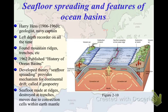He found mountain ridges. He found trenches. He put all of this together and published it as 'The History of Ocean Basins,' which provided a mechanism for continental drift. Today we call that seafloor spreading, but Captain Hess called it geopoetry — a name that didn't sit too well with scientists because it sounded too much like regular poetry.